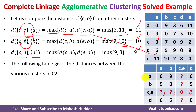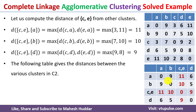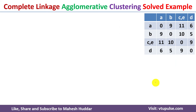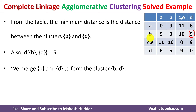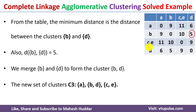After the first iteration we have four clusters, and we use this updated distance matrix as the base for the next iteration. Again we need to identify two clusters whose distance is minimum. Looking at the distance matrix carefully, the distance between clusters B and D is 5, which is minimum among all the distances. So we need to merge B and D with one another.